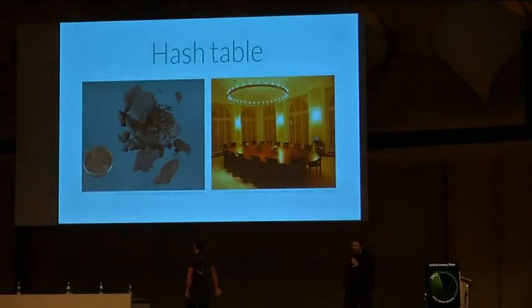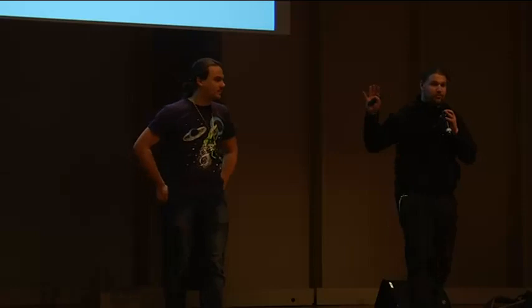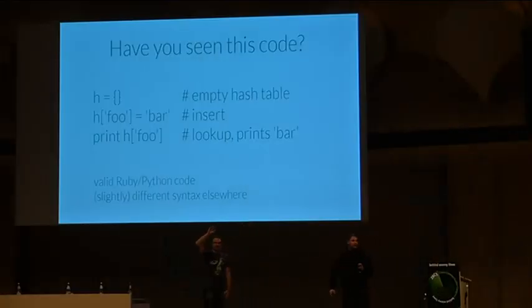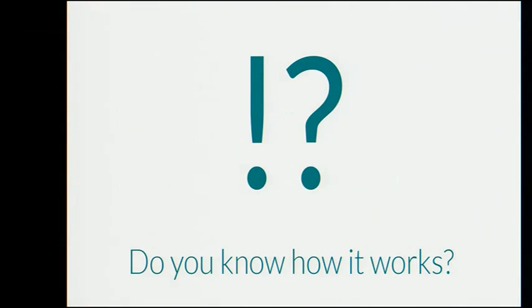Hash tables. Has anybody in the audience seen this code or code that looks very similar before? For the recording, I'd guess it'd be about half, maybe a bit less. This is valid Ruby and Python code, and what it does is it creates an associative array called h, inserts a key-value pair with 'foo' as key and 'bar' as value, and then does a lookup and gets the value 'bar' when it looks up 'foo.' Pretty easy. About 10% of the audience knows how this works — for the rest, we'll explain.